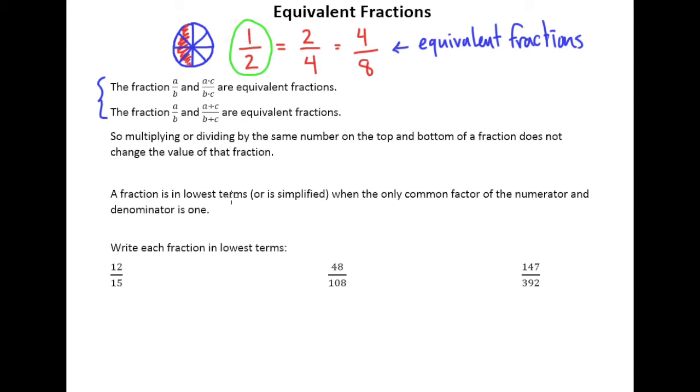So let's use this idea and the idea of this second sentence here, of a over b and a divided by c over b divided by c are really the same, are equivalent fractions. Let's use those facts to write each of these in lowest terms.